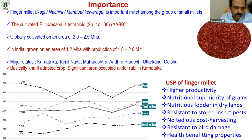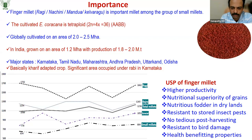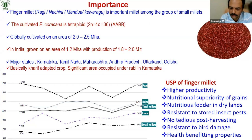Karnataka has the largest area, followed by Tamil Nadu, Maharashtra, Andhra Pradesh, Uttarakhand, and Odisha. Finger millet is a kharif crop — sowing is mainly during June — but it is also grown under rabi, especially in Karnataka, and now many states are also taking up finger millet in the rabi season. Comparing across millets, this crop has the highest productivity, around 1600 kg per hectare, with actual potential up to four to five tons per hectare.